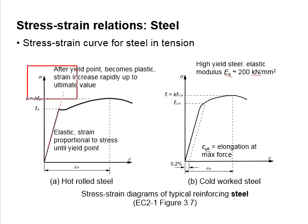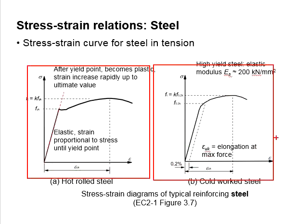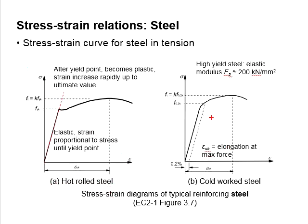The stress-strain curve differs slightly between the two types of steel. There is a sharp turning point on the stress-strain curve of the hot-rolled steel, while the turning point is not that obvious for the cold-worked steel.